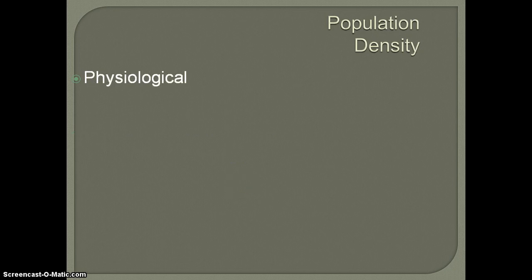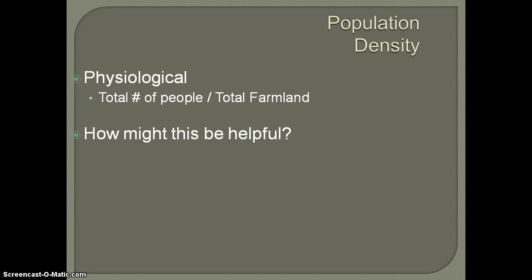Now we'll move along to physiological density. Physiological density really gives us a different perspective of a country because we're looking at a country's ability to sustain itself and its population. Physiological density is the total number of people divided by the total farmland that is under cultivation — really what we're looking at is what ability does a country have to feed its population. Countries with very high physiological densities are going to have a much more difficult time feeding their population, meaning they have less land under cultivation. Either they have to trade with other countries to get food, or they develop their agricultural technology to sustain their population.